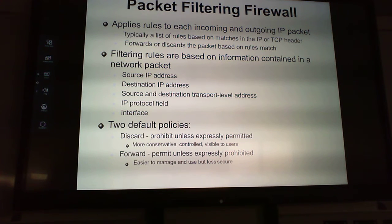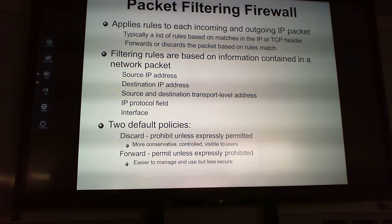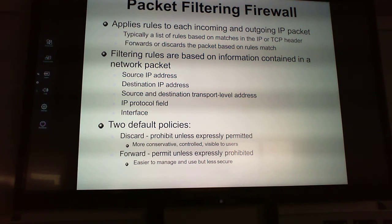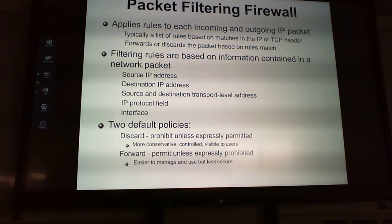A packet filtering firewall applies rules to incoming and outgoing IP packets. It's typically a list of rules based on matches in the IP or TCP header, and it forwards or discards packets based on rule matches. Filtering rules are based on information in the network packet header: source IP, destination IP, source and destination transport-level addresses, IP protocol field, and interface. It has two default policies: discard or forward.